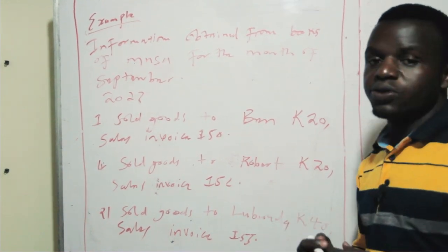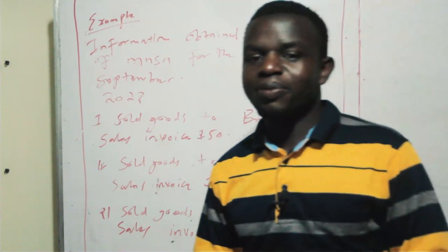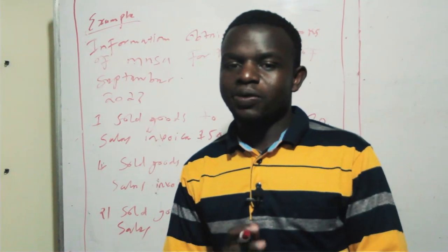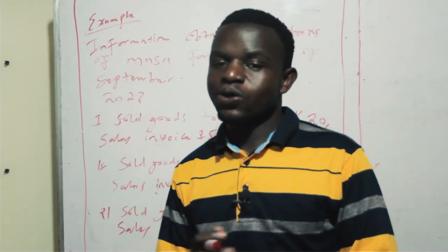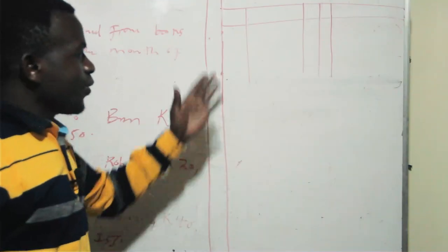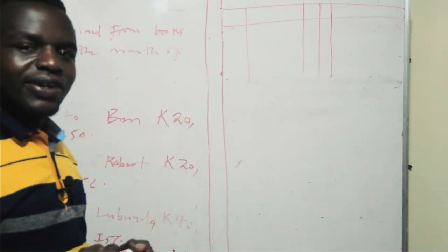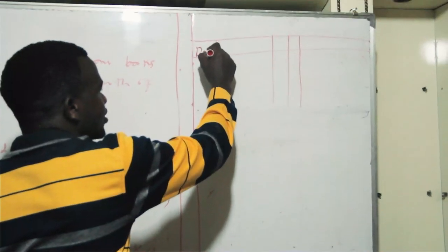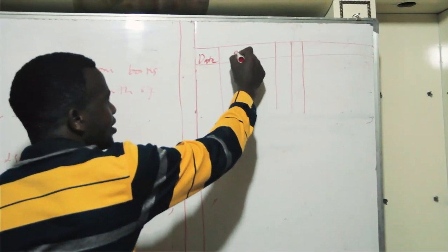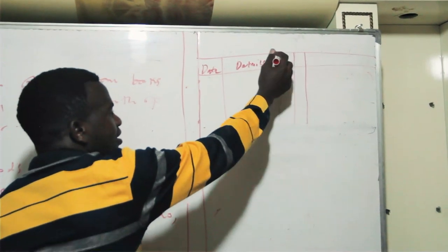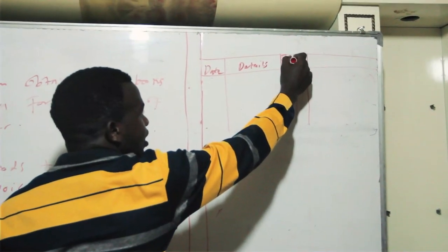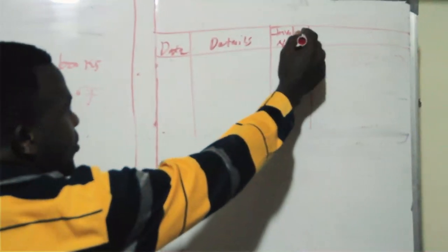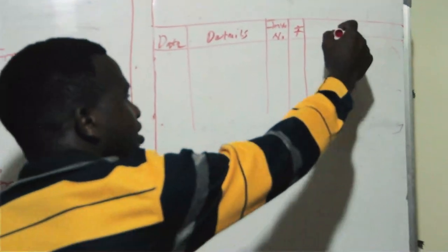From this information, we're supposed to record the sales day book, record the personal accounts, and show the sales account. We'll start with the format of the sales day book. In the first column we have date, the second column details, the third column invoice number, the fourth column folio, and the last column invoice amount.